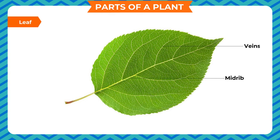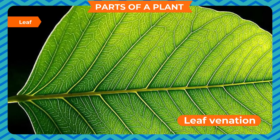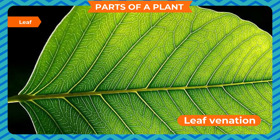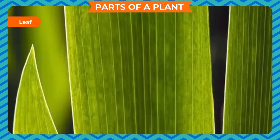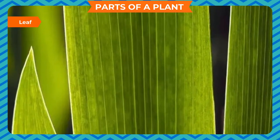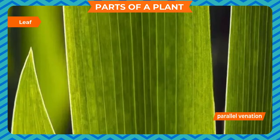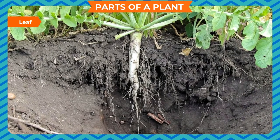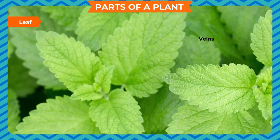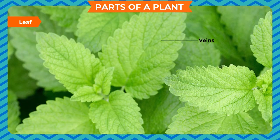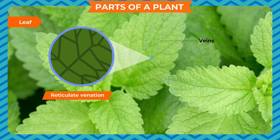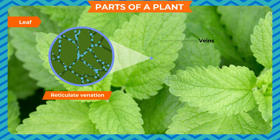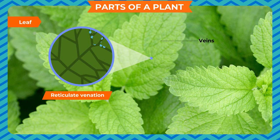Veins are lines we can see on a leaf. The midrib is the thick vein in the middle of the leaf. Leaf venation is the arrangement of veins in a leaf. In plants with fibrous roots, the veins are parallel to each other along the length of the leaf — this is called parallel venation. In plants with tap roots, the veins form a network on both sides of the leaf — this is called reticulate venation. The veins transport water, minerals, and food, and also provide support to the leaf.